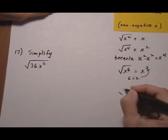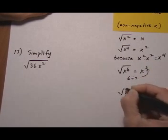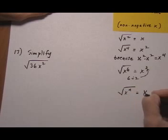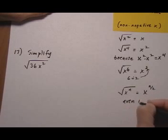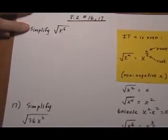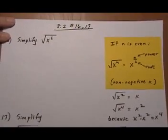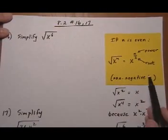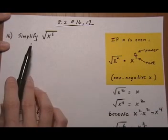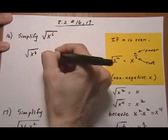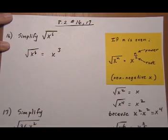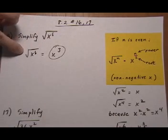Same over here. So if we just keep going on, for any power where n is even, the square root of x to the n for even n is x to the n divided by 2. And that's where this little recipe here comes from. So on number 16, simplify root x to the sixth. Root x to the sixth equals x cubed, because x cubed times x cubed gives us x to the sixth. So we do 6 divided by 2 — power divided by root.